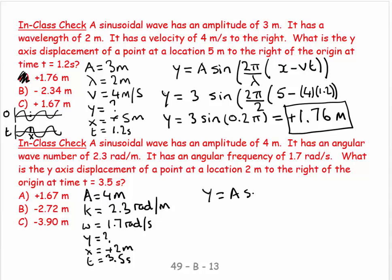So y equals A sine kx minus ωt. Negative means it's traveling to the right. So y equals 4 sine, k is 2.3, x is 2, minus ω, ω is 1.7, and t is 3.5.